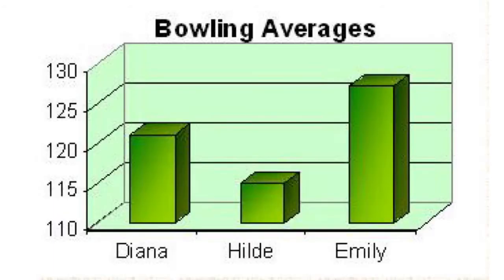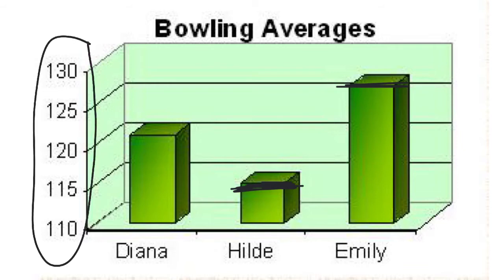Let's look at a few examples. Here's the first example — bowling averages — comparing three different people. When you first look at this data it seems like there's a difference between how these different people do. It kind of seems like Hilde isn't nearly as good as Emily, but if you look at the scale you can see their scores really aren't as different as they appear. The big issue is the scale: it counts by fives but starts at 110. The fact that it doesn't start at zero leads this to be misleading.